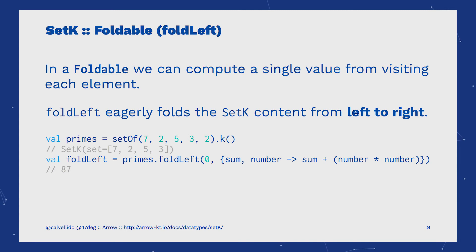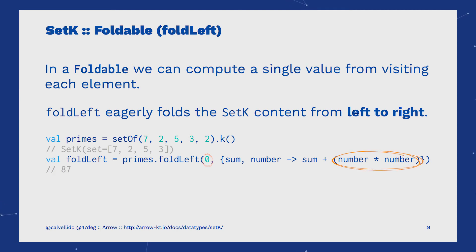In this case, we have two arguments. The first parameter is the initial value, and the second is a function for transforming the value in each iteration. In this example, we are accumulating a power of each number contained in our set.